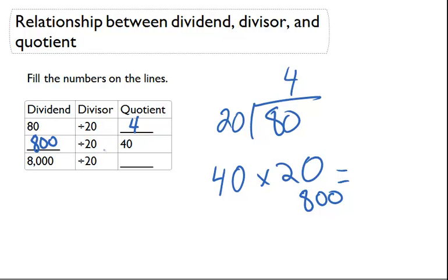Here with the dividend and divisor, all you have to do is a long division problem. So 8,000 divided by 20, and we know that 20 goes into 80 four times. So we know that's going to be part of the answer.